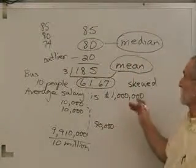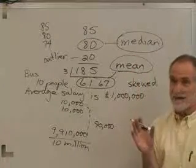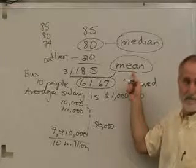But given the choice, if somebody says which one of these represents the middle of the data or the average, median's always going to be better than the mean.